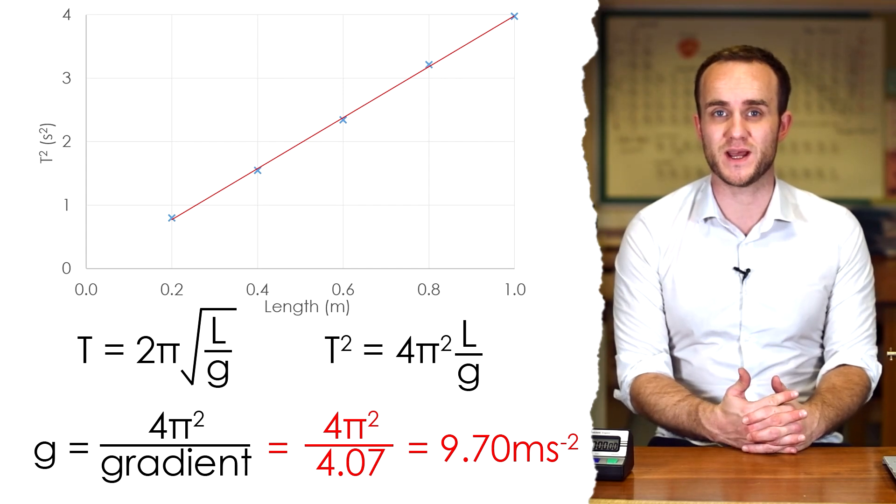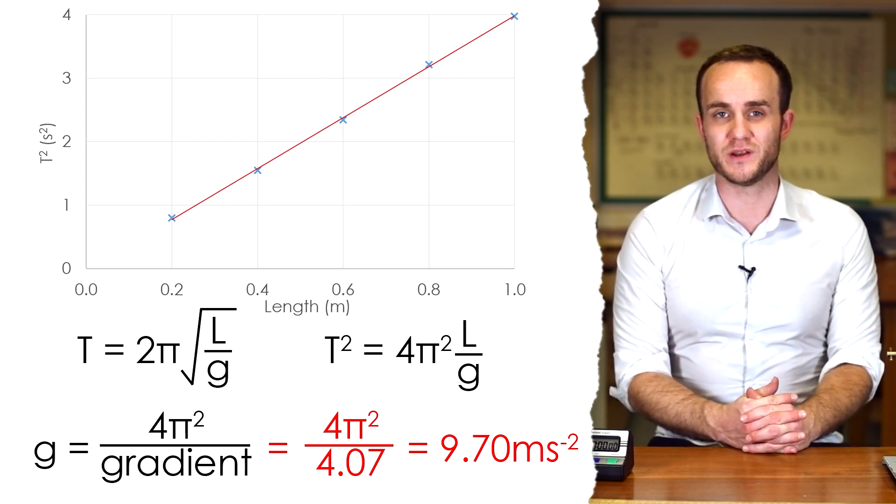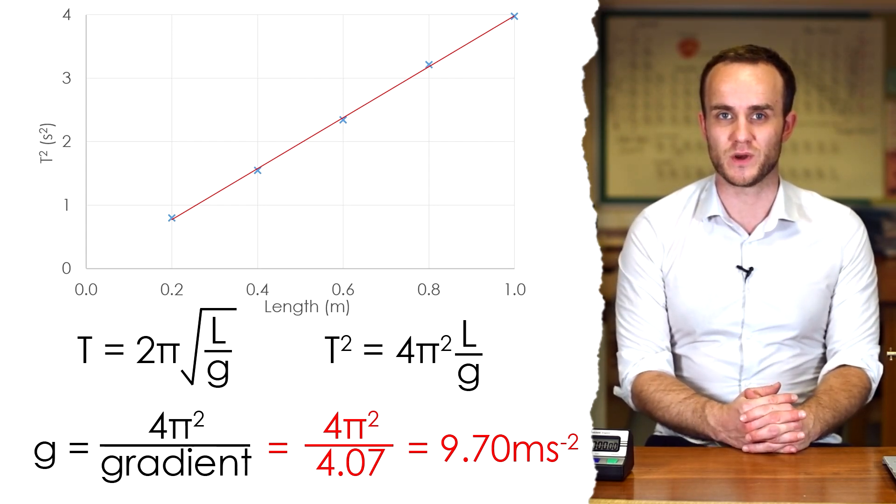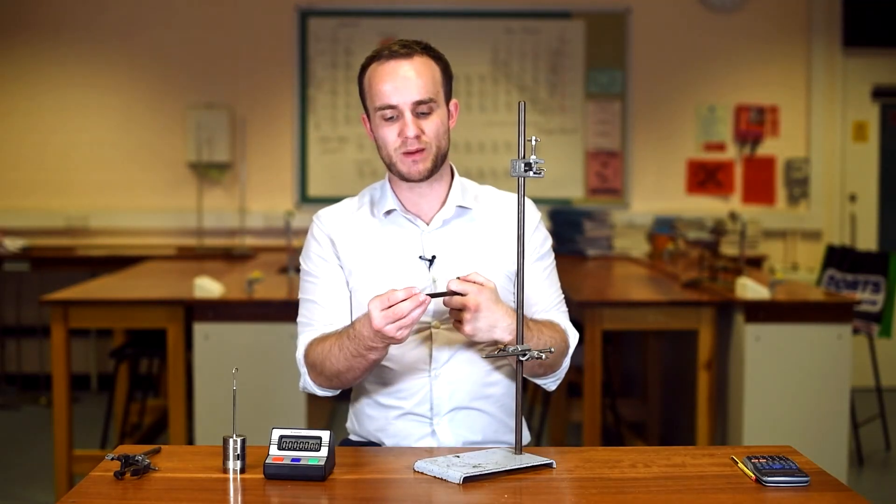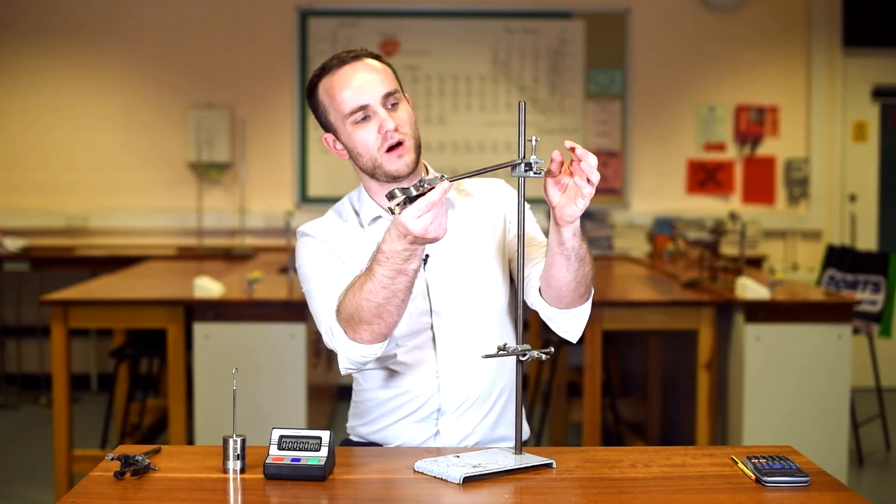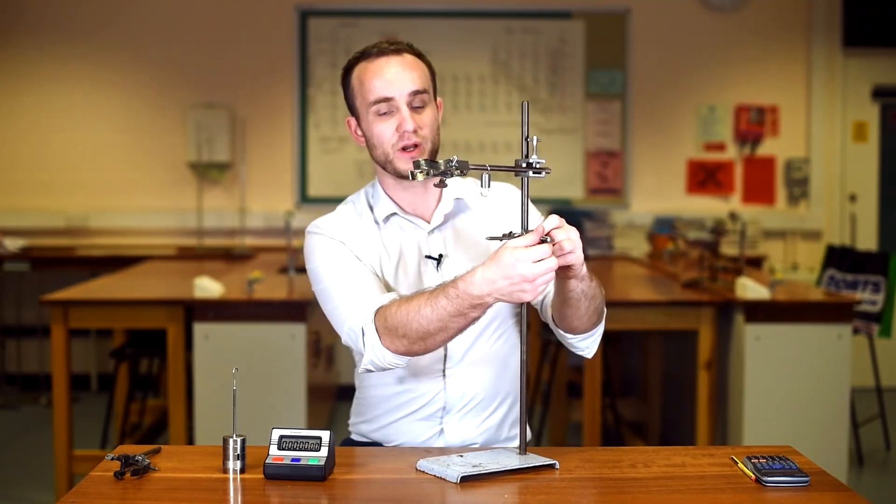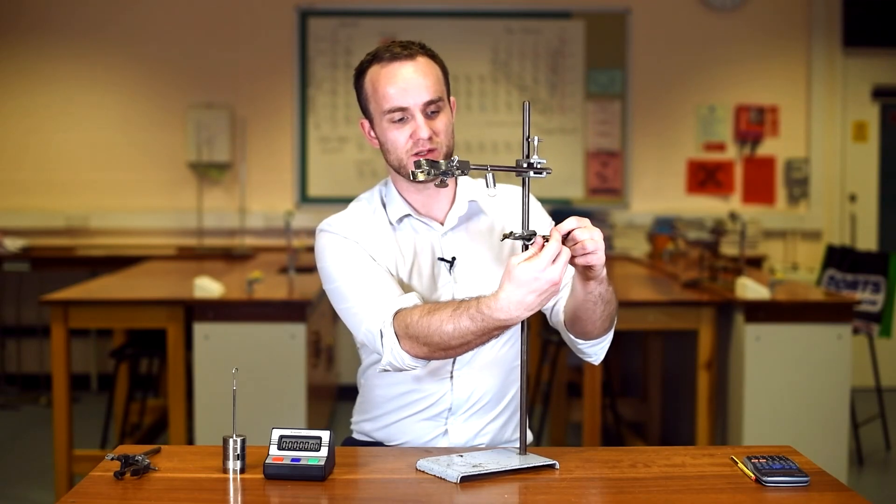The mass spring system is very similar. All we have to do is get a spring, and what we can do is trap it on the arm of a clamp. We're going to have a nail as a fiducial marker as per usual.